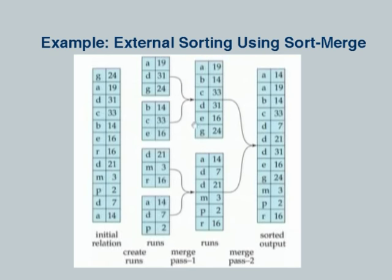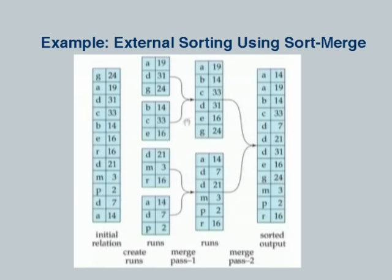In our toy example we can only merge two runs at a time, so we end up with two runs merged into one and the other two merged into one. In general if we can merge 10 runs, the number of runs after one merge phase will be one tenth of what it was. In reality today memory is not so scarce — you can easily merge even ten thousand runs. So in most cases the first step creates a number of runs, and then in almost all cases except for ridiculously large relations, all runs can be merged at one go into a single output file. Usually only two phases are required: generate runs, then merge all runs into one single sorted run.